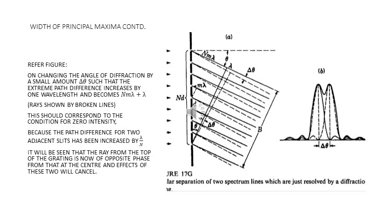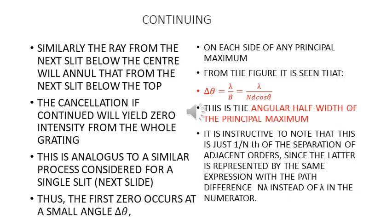The condition Nmλ + λ should correspond to zero intensity. This is so because the path difference for two adjacent slits has now been increased by λ/N. The ray from the top of the grating is now in a phase which is opposite to that at the center, and because of that the effects of the two will now cancel.